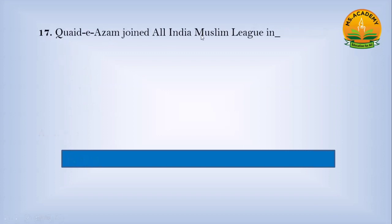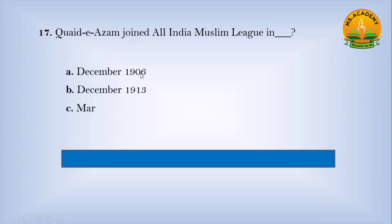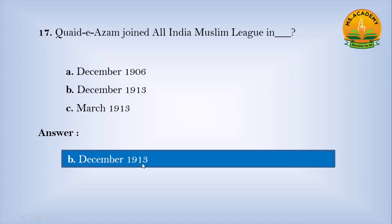Quaid-e-Azam joined the All India Muslim League in: Option A, December 1906; Option B, 1911; Option C, December 1913. Answer: C — December 1913.